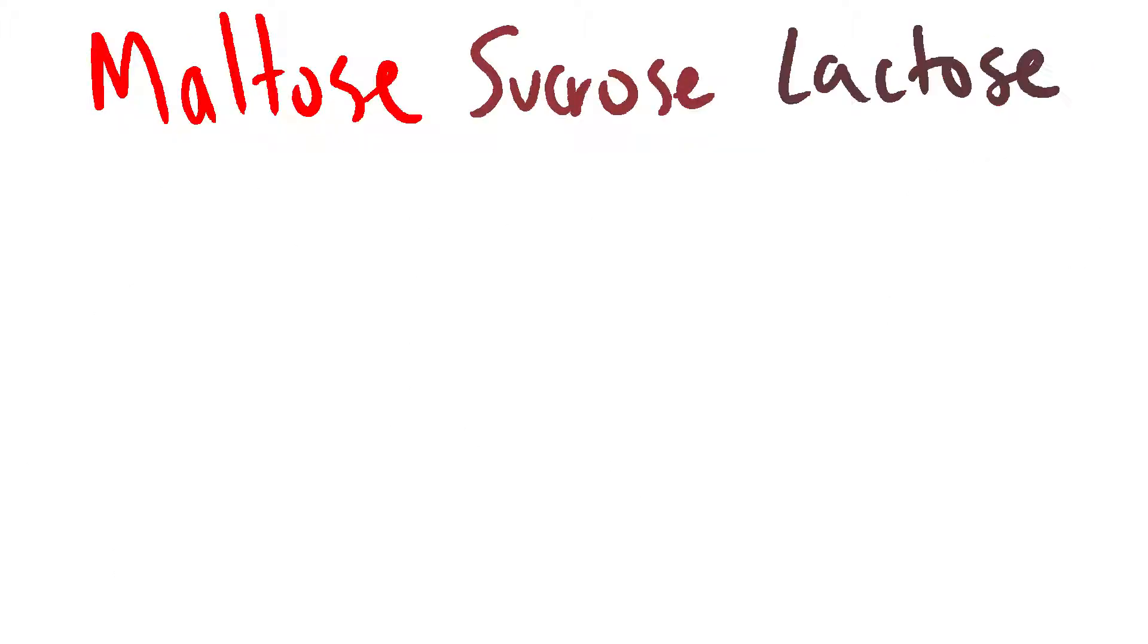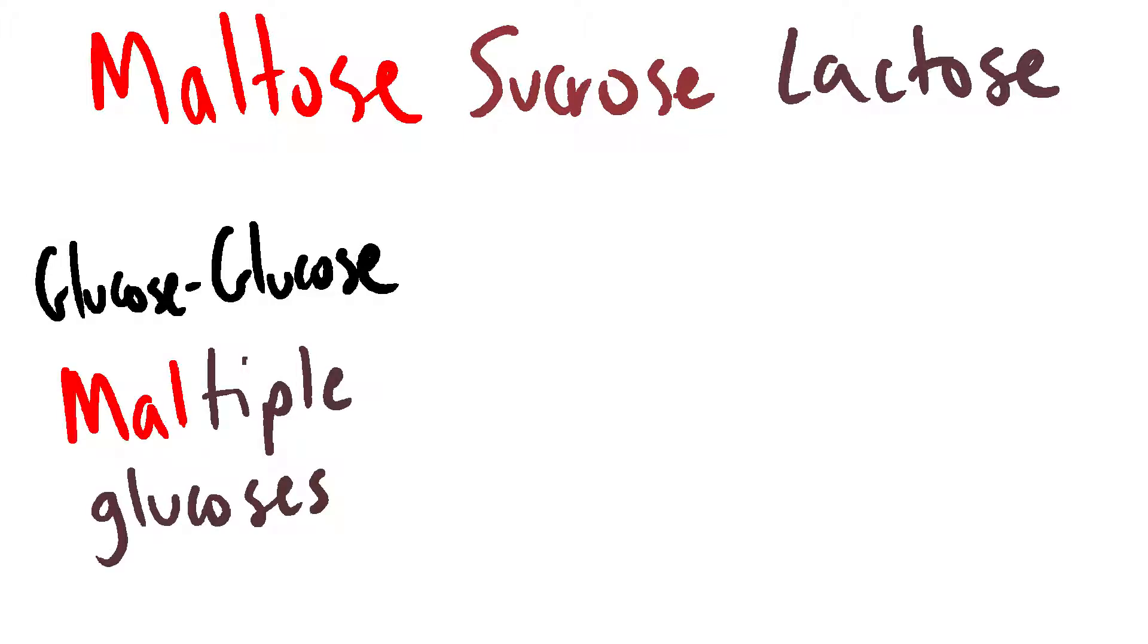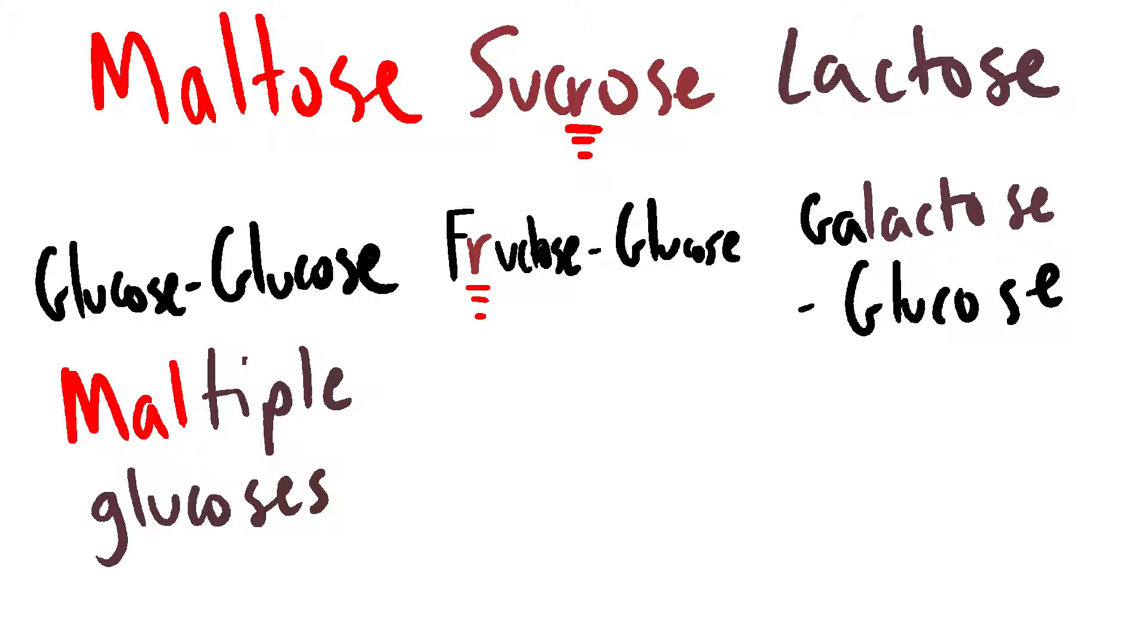Maltose, sucrose, and lactose are all sugars that are made up of two of these 6-carbon sugars. All of them have glucose. Maltose, which is made up of two glucoses, can be memorized as multiple glucose. Sucrose has an R in it, so it has to have fructose, which has an R in it, and glucose. Galactose ends with lactose, so lactose is galactose and glucose.